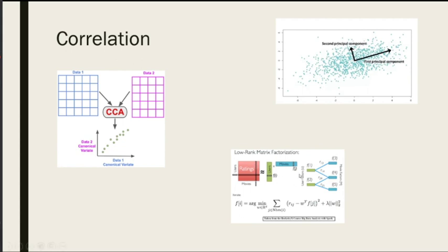This is called alternating least squares, and it's used for recommendation systems. Netflix would use this — they take your user ratings of movies, use the ratings of other users who have watched those movies plus other movies, and give you recommendations. So if you've watched a bunch of Disney movies and there's one you haven't watched like Frozen, and it sees you've rated all those Disney movies really highly, other users who also rated those movies highly also rated Frozen highly, so it recommends Frozen to you. That's essentially what this does.